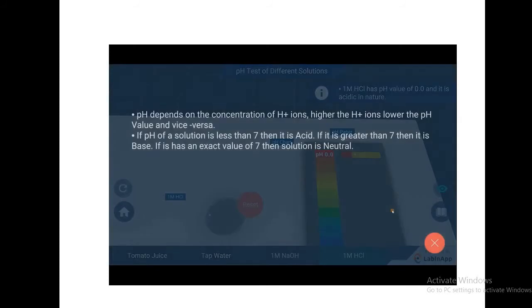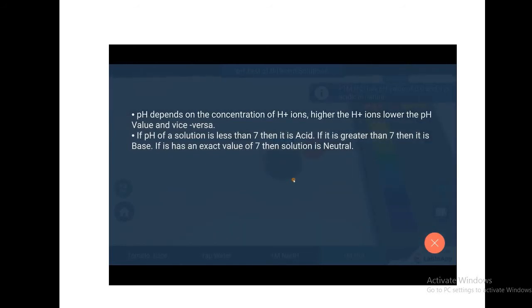pH depends on the concentration of H plus ions. Higher the H plus ions, lower the pH value and vice versa. In conclusion, if pH of a solution is less than 7, then it is acid.